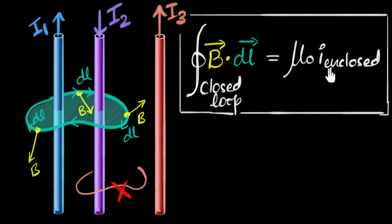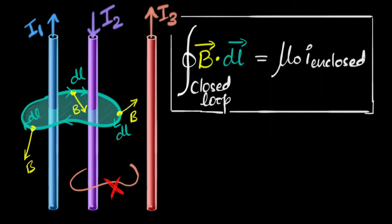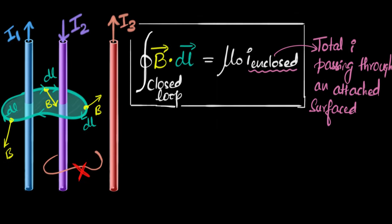Now Ampere says, enclosed current is the current that punches through this surface. Whatever is punching through that surface is the enclosed current. So the enclosed current is basically the total current that is passing through an attached surface to the loop. The attached surface is our soap solution.